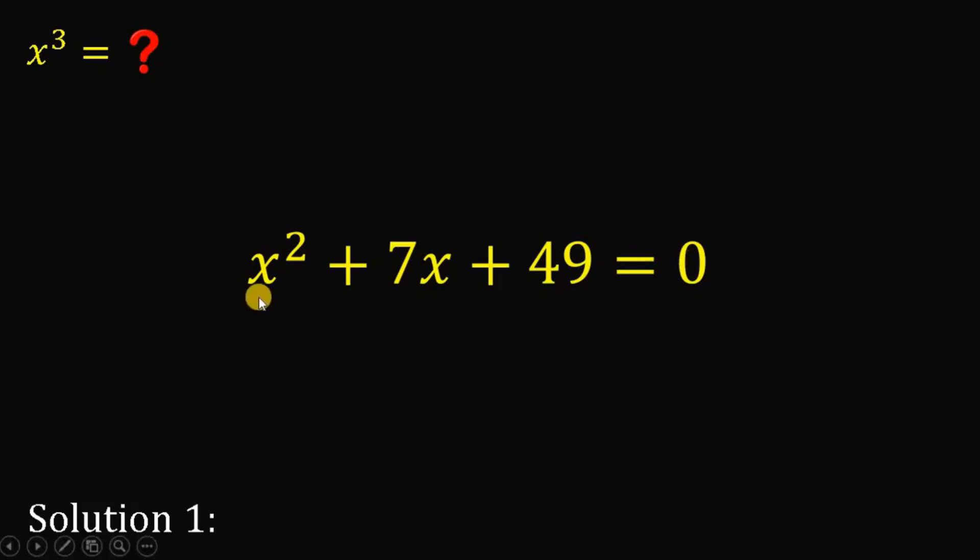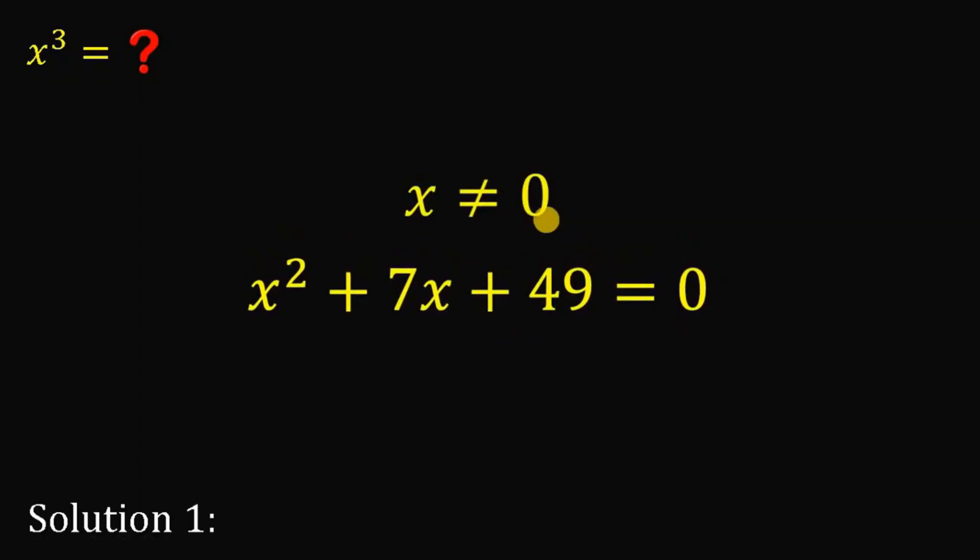Take note that given this equation x squared plus 7x plus 49 equals 0, we can already say that x is not equal to 0 because if we replace all x by 0, the left-hand side is not equal to 0. So, meaning x is not equal to 0.